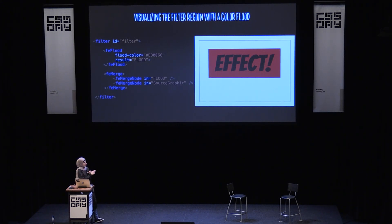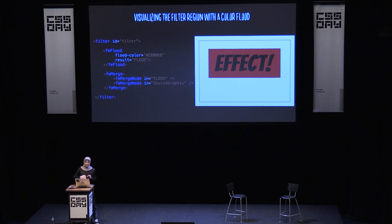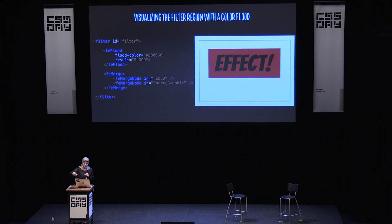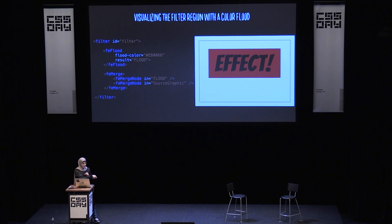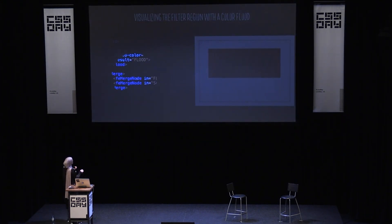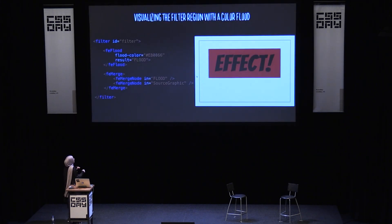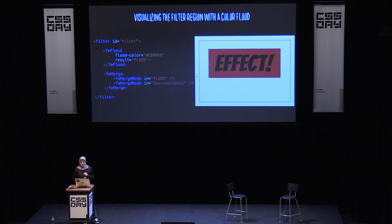To visualize the filter region, you can apply a color — like a background color — to that region using the flood filter primitive. The flood primitive literally floods the filter region with a color specified in the flood-color attribute. But the color will cover everything. So in order to make it behave like a background image, you want to move the flood layer to the back and display the source image on top of it again. This is what FE merge is used for — it merges effects together. Inside FE merge, you have merge nodes, which are literally layers. The first one is in the back and the last one is on top.